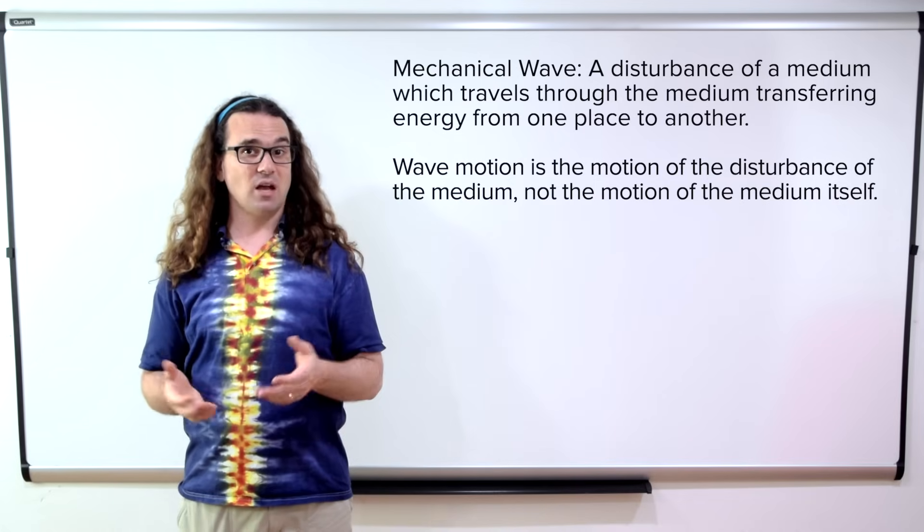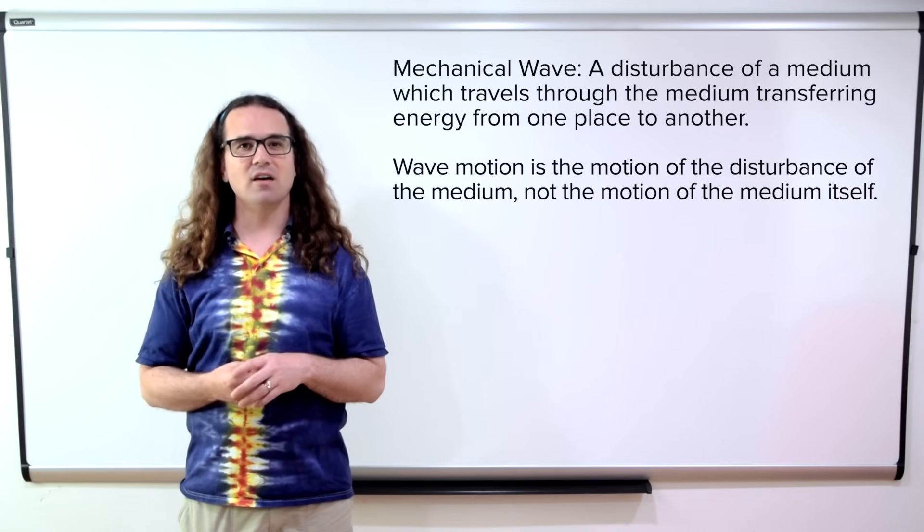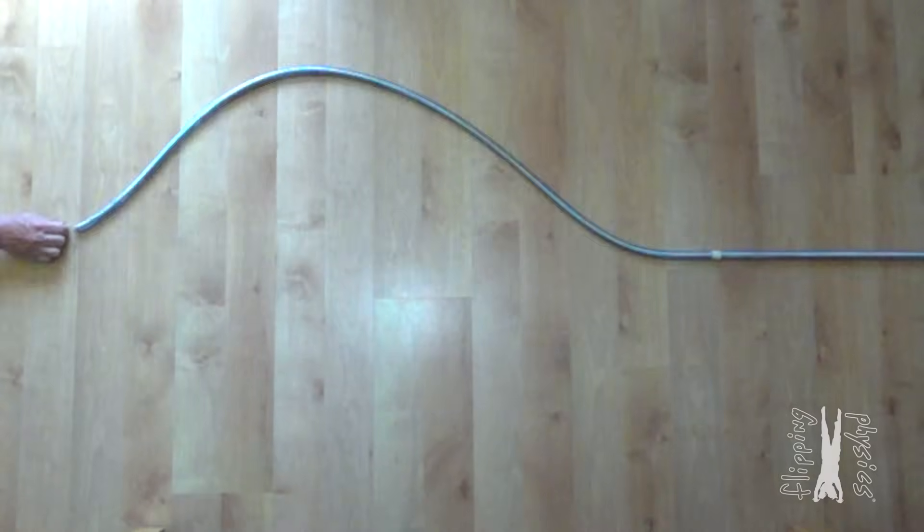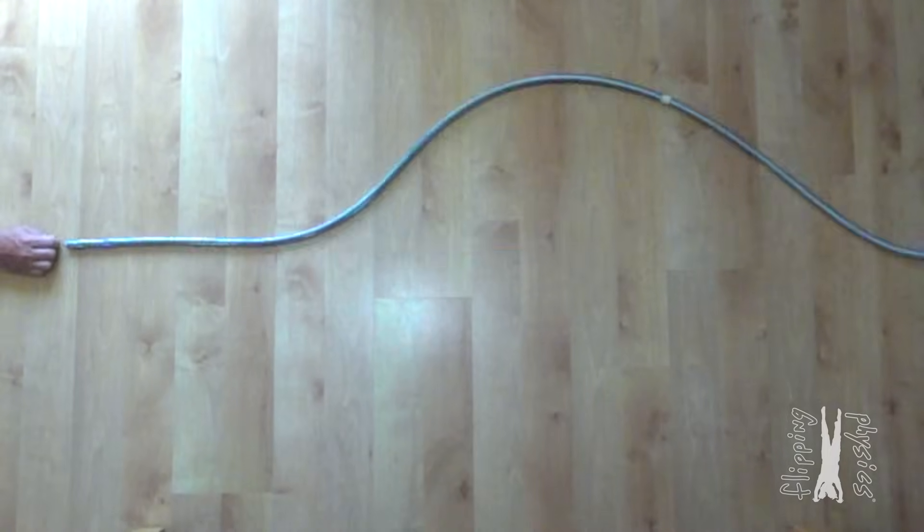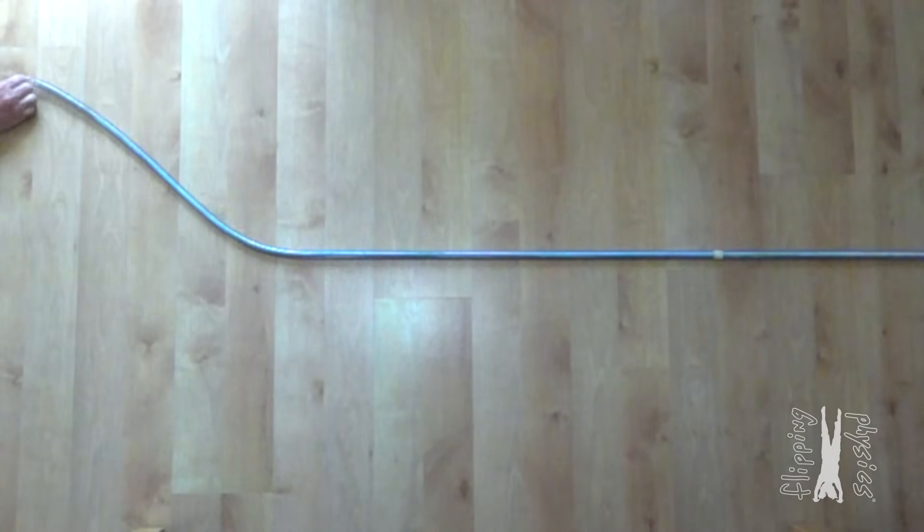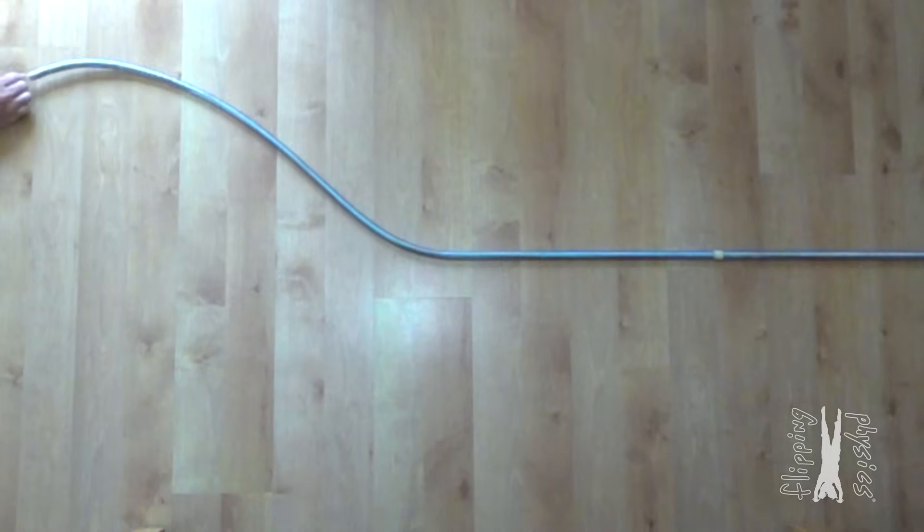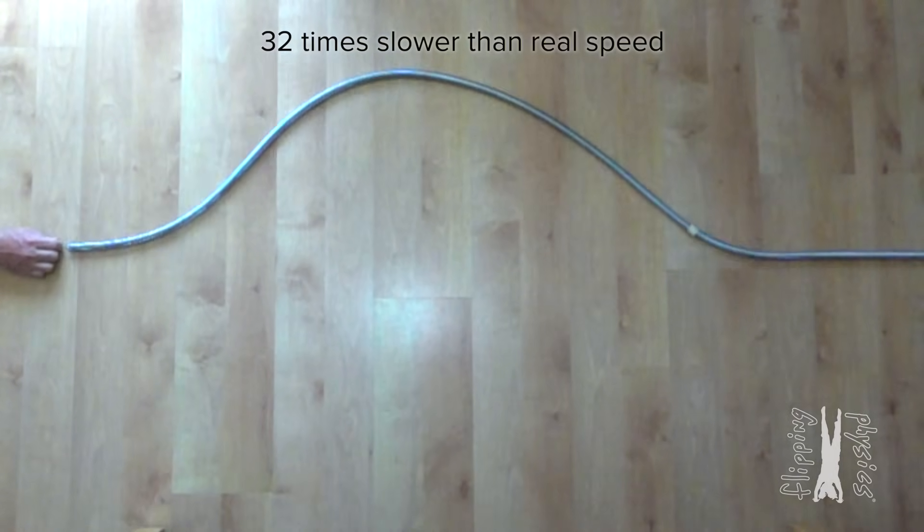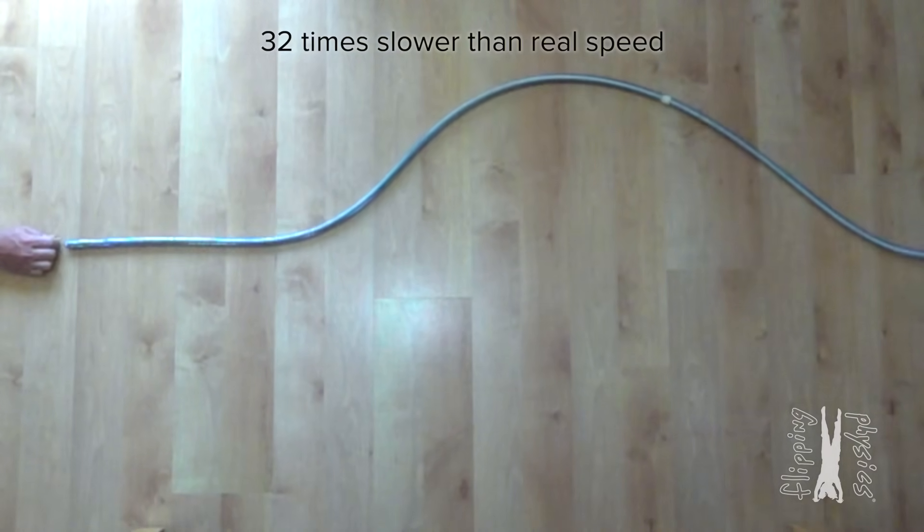We will use waves on a spring to show the properties of mechanical waves. We will start with a single wave pulse traveling through the spring. Yeah, so that happens way too fast to be able to see it, which is why I have slowed it down 32 times slower than real speed. Again, this is a single wave pulse moving through a medium.